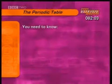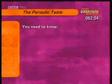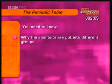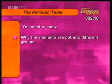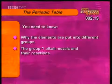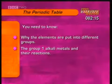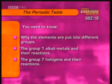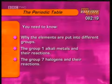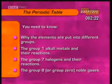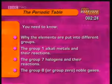To summarise, it's really important for your exam to know why the periodic table is arranged the way it is — especially why the elements are arranged in groups, how the group 1 alkali metals react and why, the group 7 halogens and their reactions, and the properties of the group 8, sometimes called group zero, noble gases.